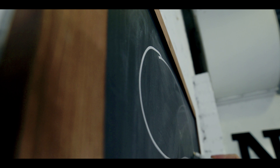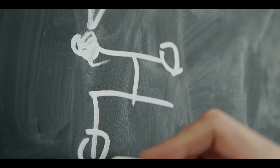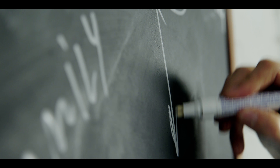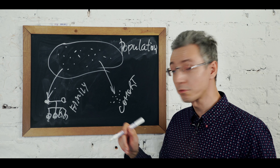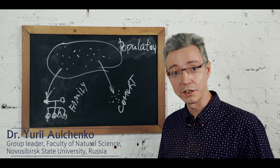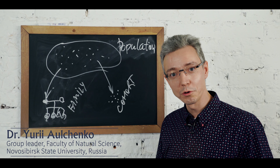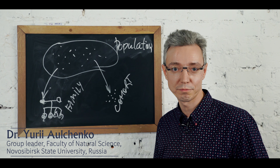The question is: how do we identify these causative variants? We find these variants in specific families or cohorts. However, these are representatives of bigger populations. I am going to tell you about the rules which govern genetic diversity of populations.